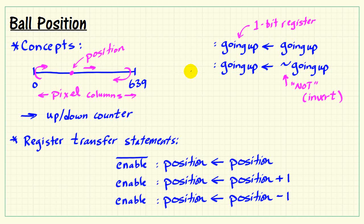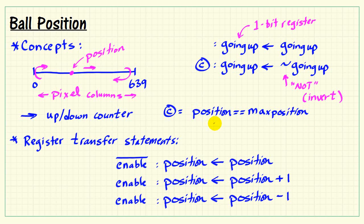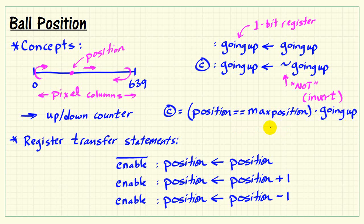The condition at the edges where we should be reversing direction is a bit long, so I'll use a circle-C symbol to indicate the entire condition associated with that line. We detect that when position is identically equal to the upper limit, or max position, that's associated with flipping the direction. We also need to say that at the same time, going up is in fact active.